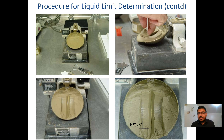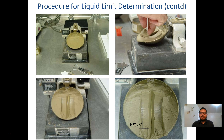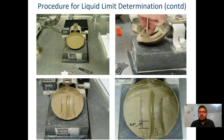We also need to determine the moisture content of that specific soil sample. We take a moisture can, weigh it, and take some samples from the merged soil. Then we place the moisture can with the wet soil sample in the oven for 24 hours. After that, we weigh the moisture can again with the dry soil sample, and with those measurements we can easily determine the moisture content. For each trial, we will have one moisture content value and one number of blows.